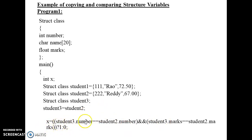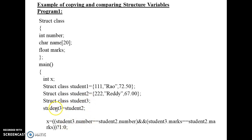To understand how comparison works, I've used the ternary operator. When this expression is true, one is assigned to x; when false, zero is assigned to x. To access a member I cannot do it directly — I must use the dot operator: variable name dot member. So 'student three dot number' equals 'student two dot number' — this will be true because student three holds student two's value.